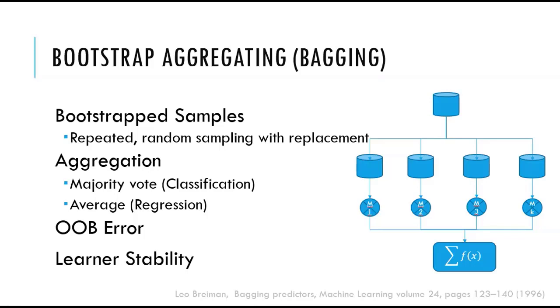One interesting thing to note is that bootstrap aggregating or bagging will not improve accuracy for stable learners. A learner is a stable learner if change in the inputs or the parameters, small change in the inputs or the parameters of the learner, do not produce large change in the output.